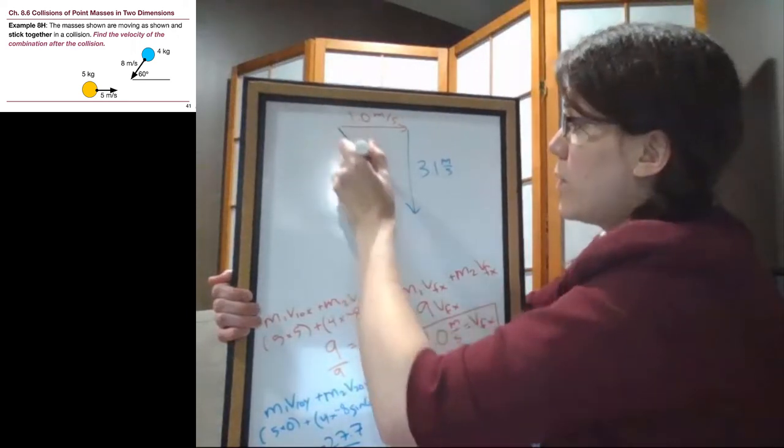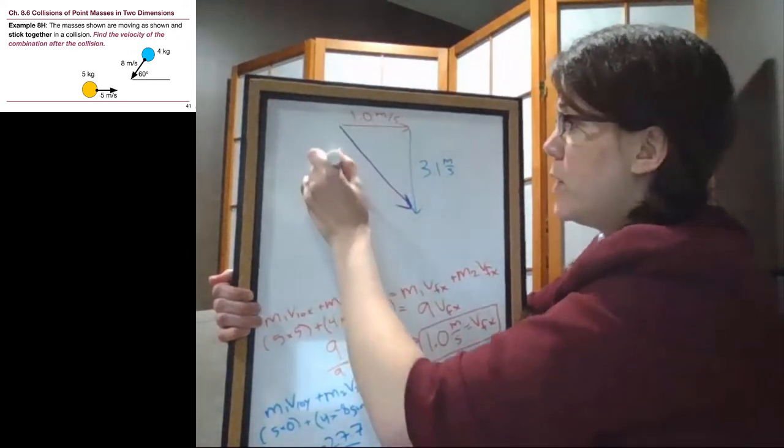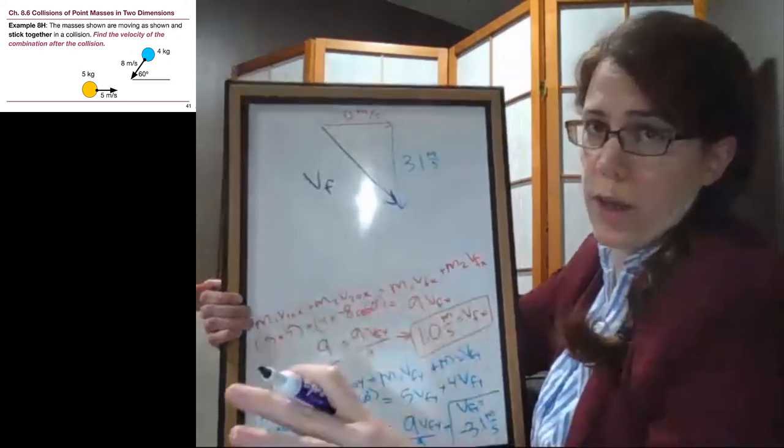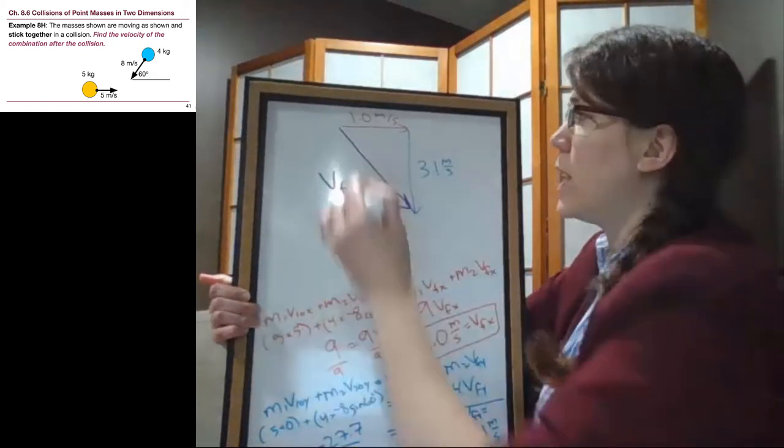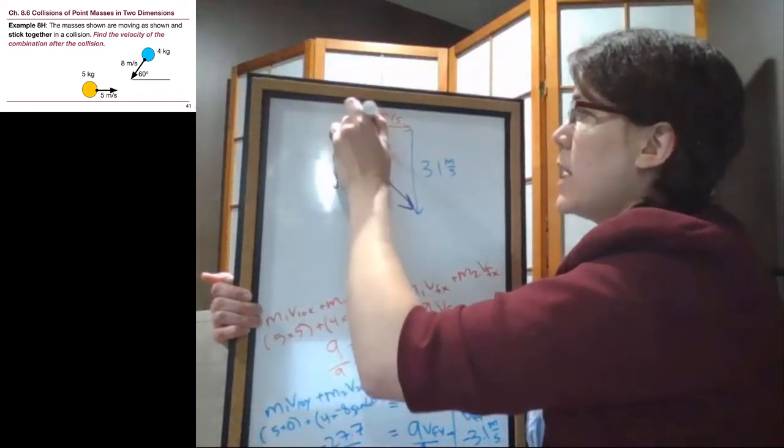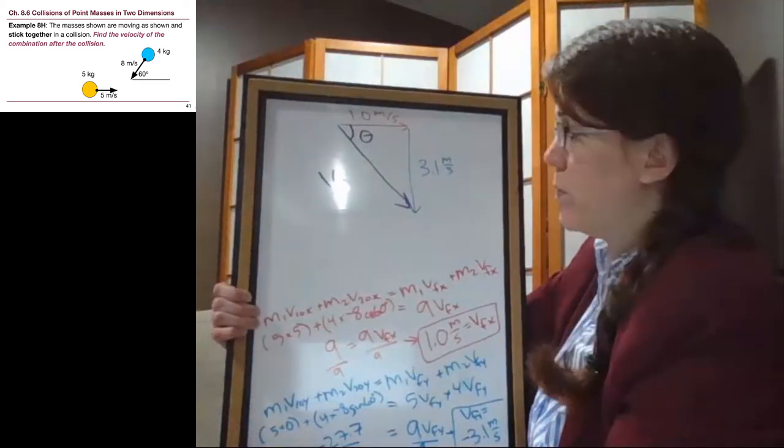And we have the final, the final for the whole thing, not just mass 1, not just mass 2, not x, not y, but the whole v final, and the angle. We need to find those two numbers.